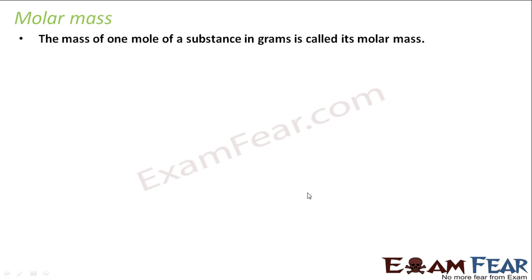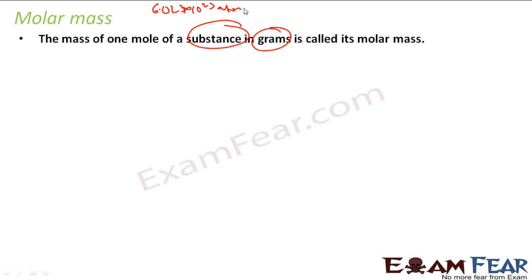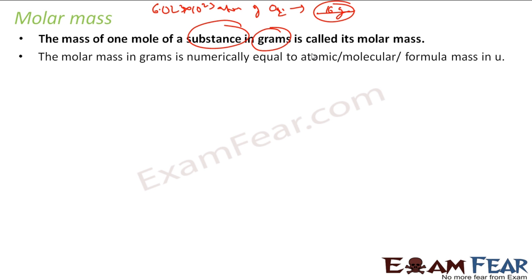Let us understand a new topic called molar mass. Molar mass is the mass of one mole of a substance expressed in grams. You take one mole of any substance, find its mass in grams — that becomes molar mass. One mole is 6.023 × 10²³ particles. For example, taking this many atoms of oxygen gives 16 grams — that is the molar mass. Molar mass is always equal to the atomic mass, molecular mass, or formula mass of the substance.